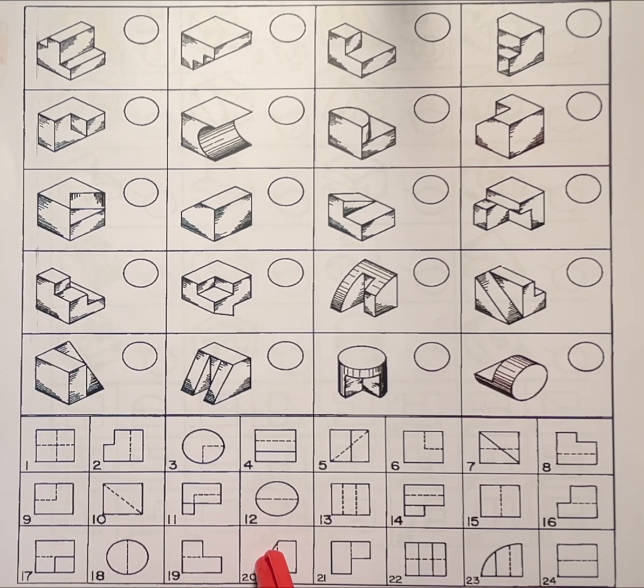It could be a front, it could be a top, and it could be a right side view. We will not know that until we determine which view has the hidden line.